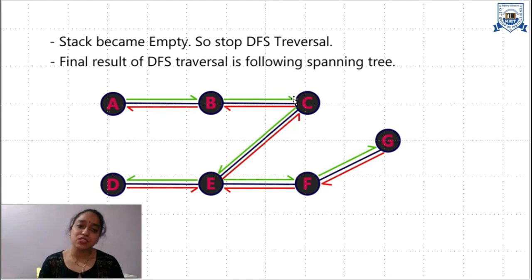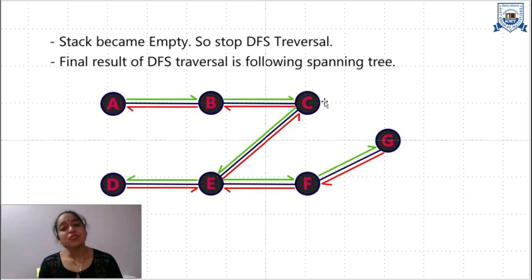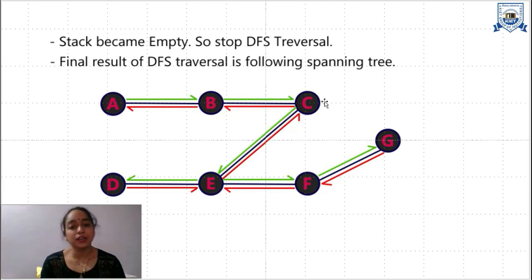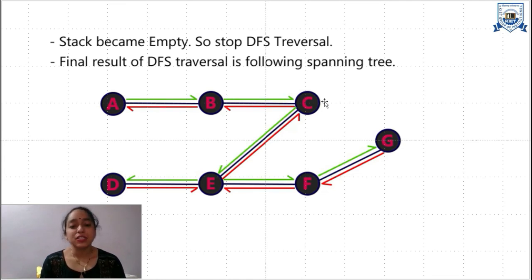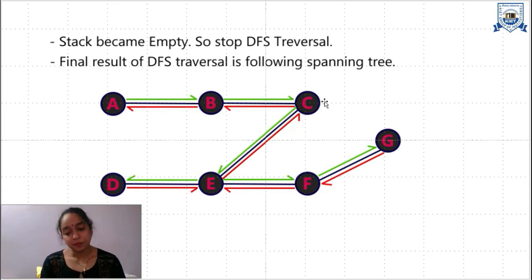The sequence in which the nodes were visited is called the DFS traversal. This DFS traversal may produce more than one sequence, as there can be more than one unvisited adjacent node at any given point. So there can be more than one DFS traversal sequence for a particular graph.